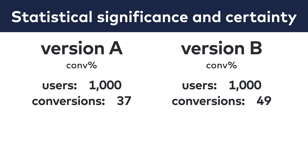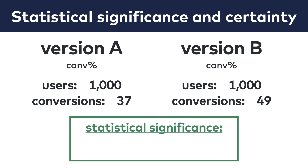You have already heard me mention the expression statistical significance. This mathematical concept is implemented to help you decide in unclear situations like this one. There are different ways to calculate statistical significance, and I will get back to that soon, but first let me just show you the result. After running the numbers, the statistical significance of this A-B test result is around 91%.